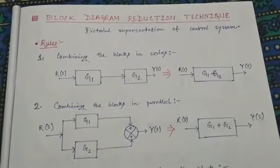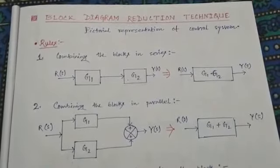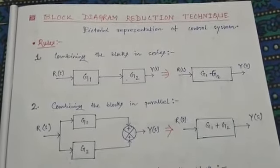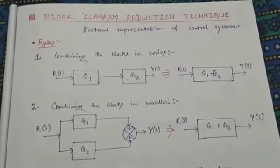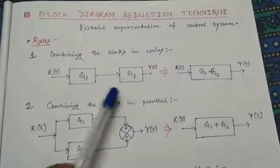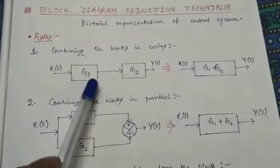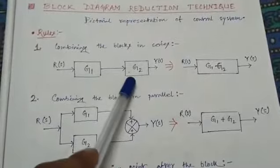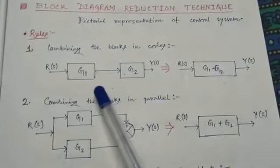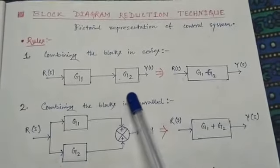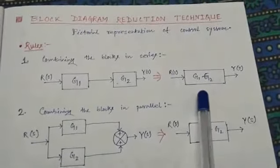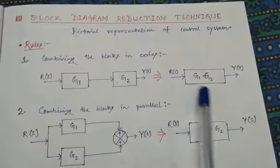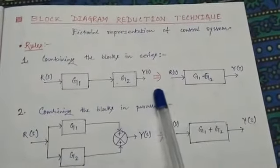Rule number one: combining blocks in series. Here you can see there are two blocks in series connection, g1 and g2. If we combine these blocks, the resultant block will be g1 multiplied by g2 — simple multiplication.